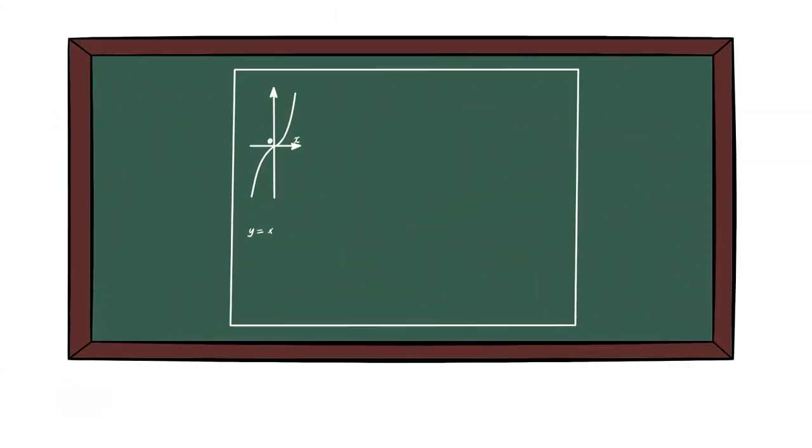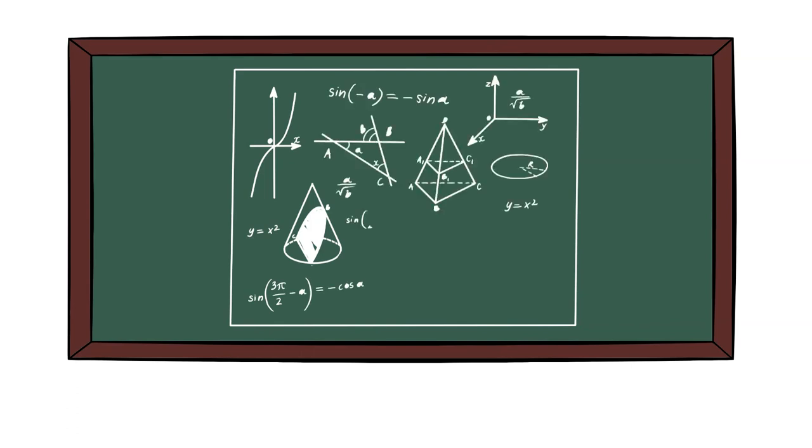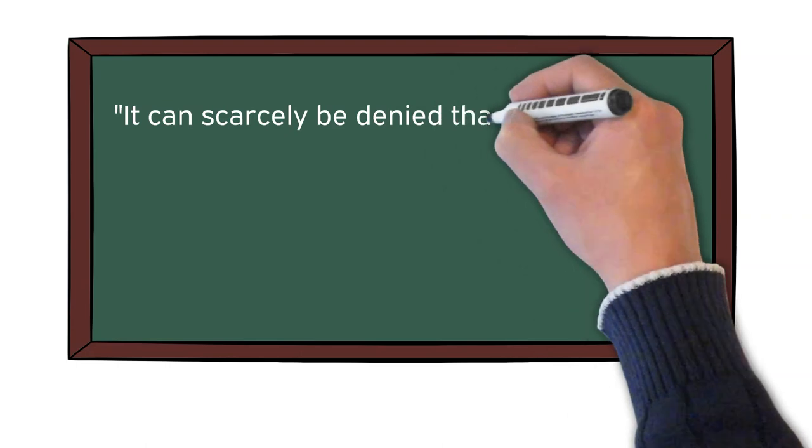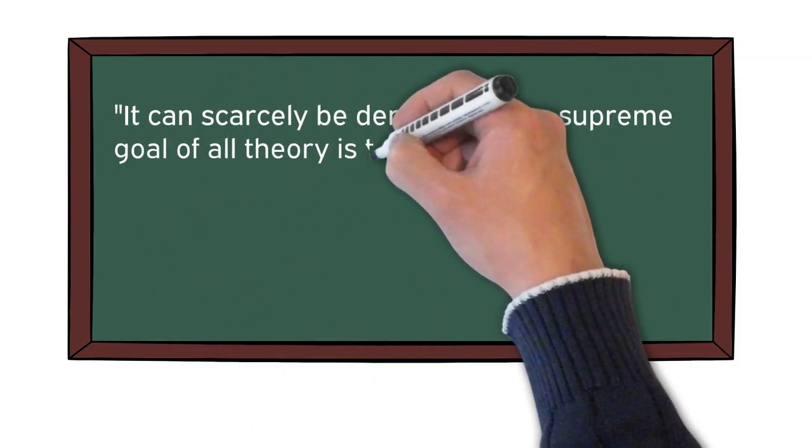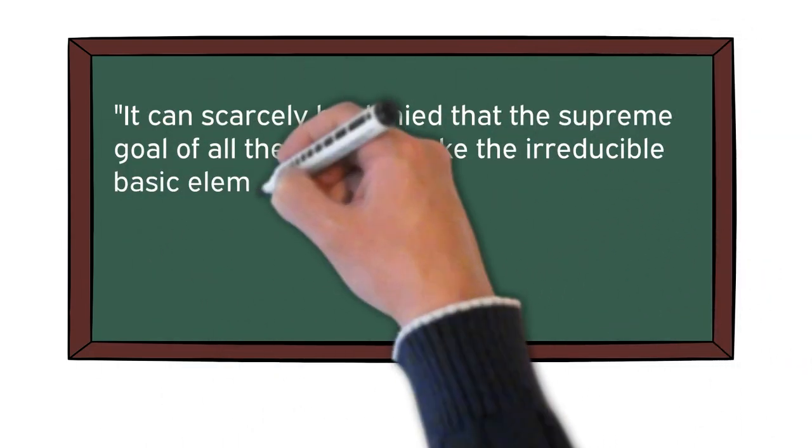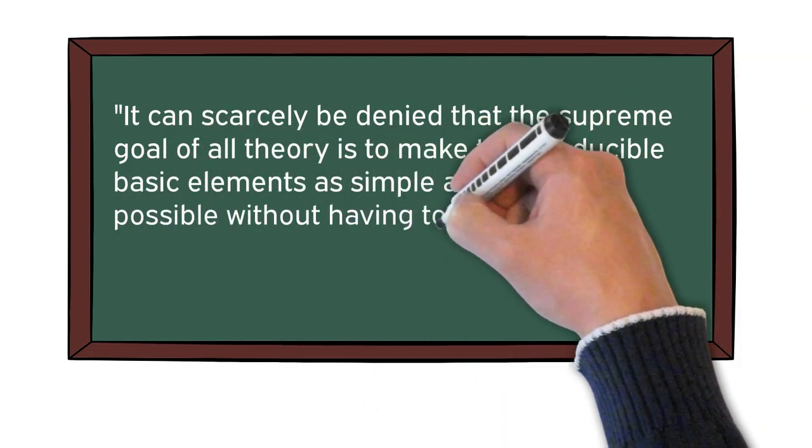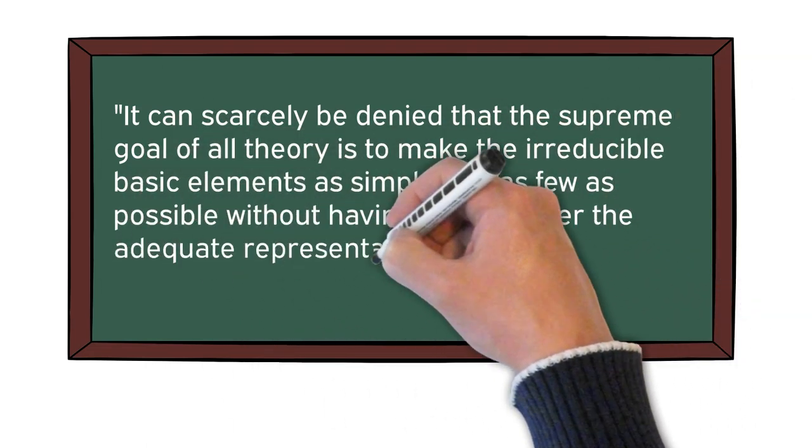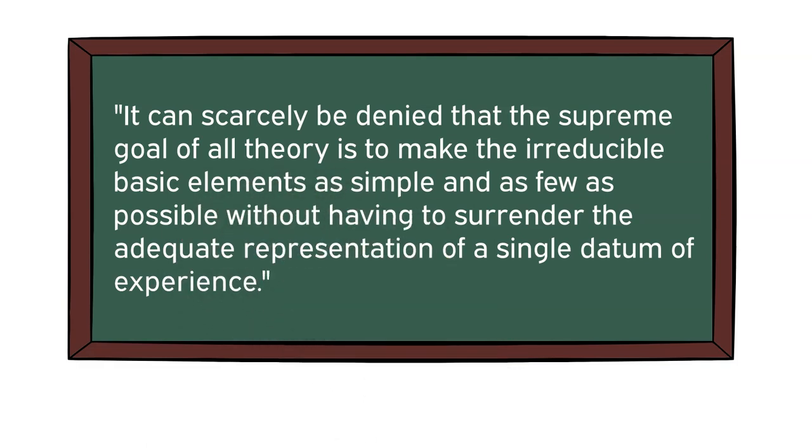Einstein made use of Occam's razor when creating his theory of special relativity. Einstein said a similar version: It can scarcely be denied that the supreme goal of all theory is to make the irreducible basic elements as simple and as few as possible without having to surrender the adequate representation of a single datum of experience.